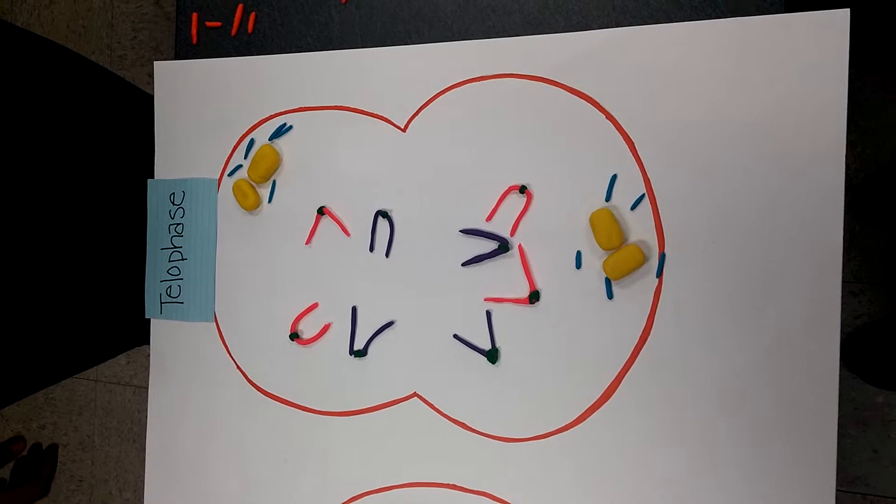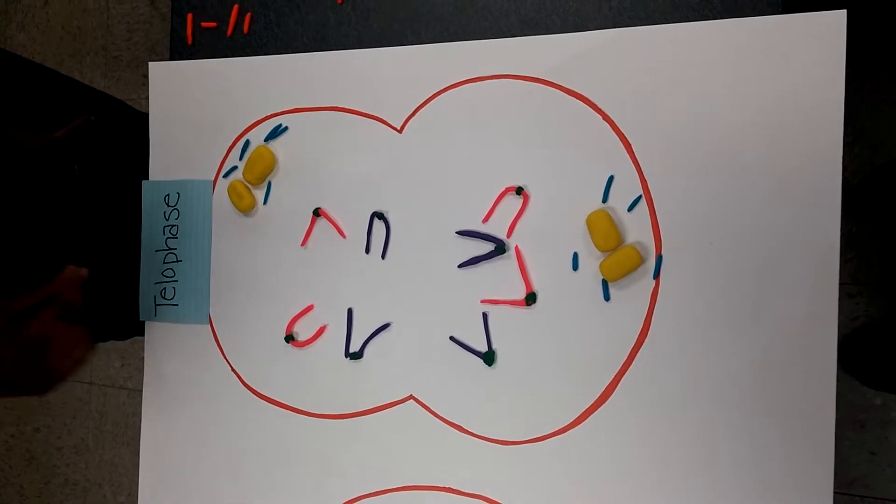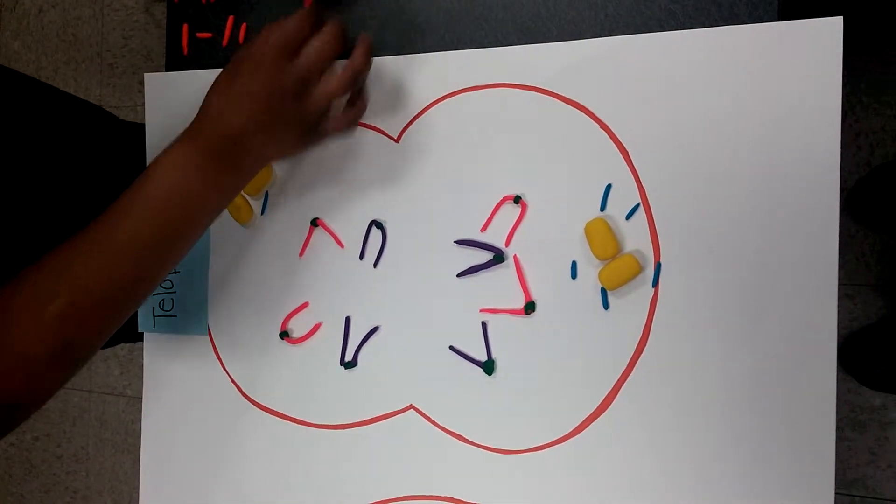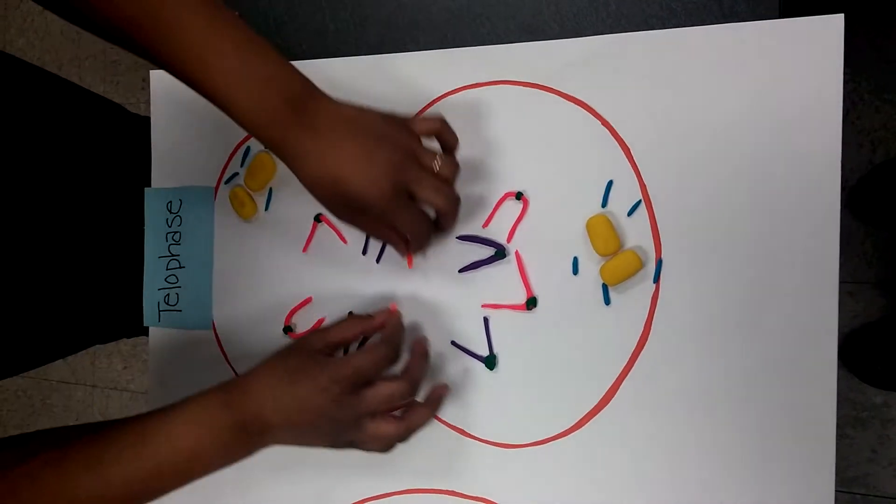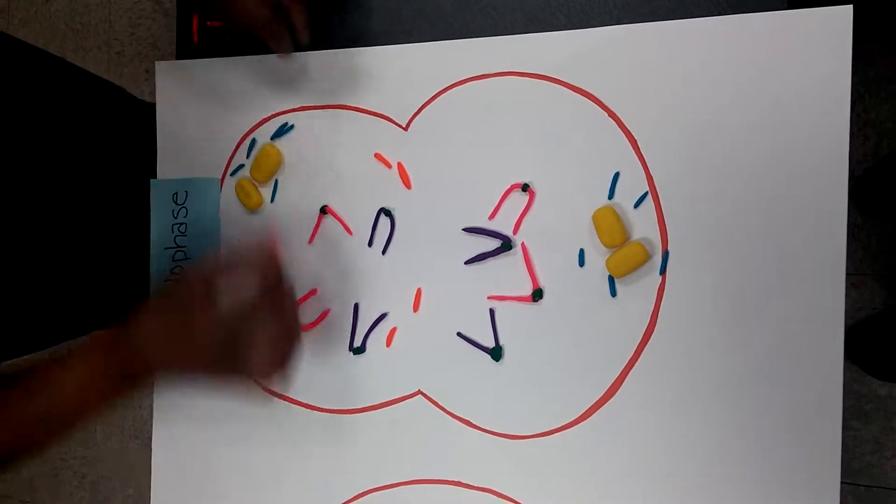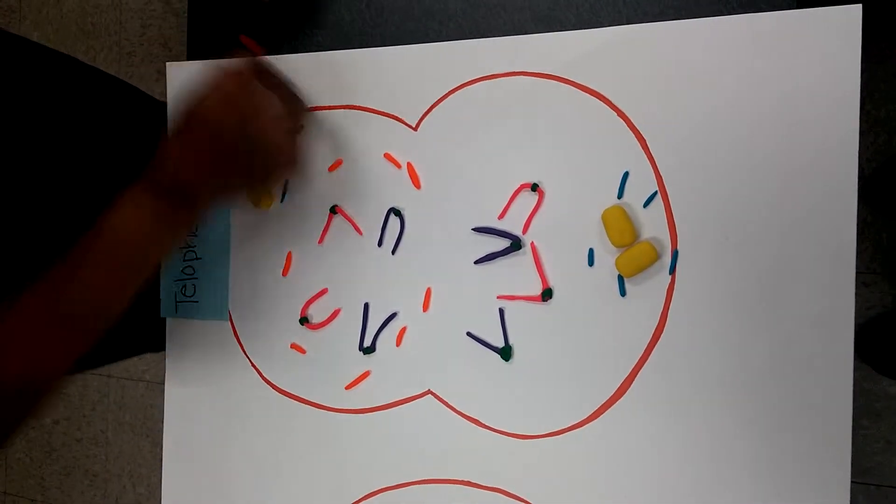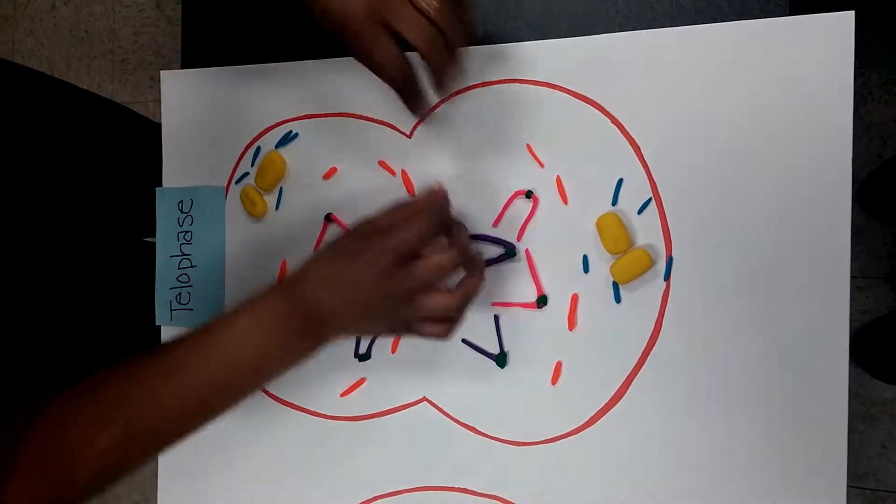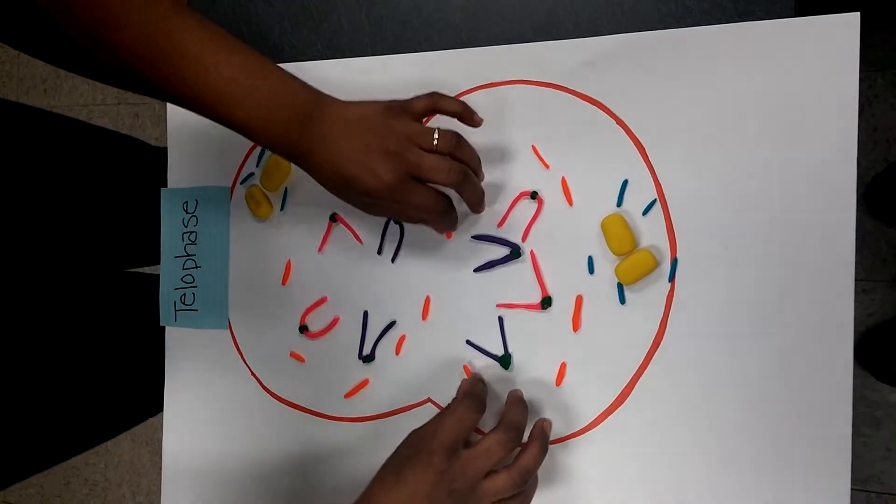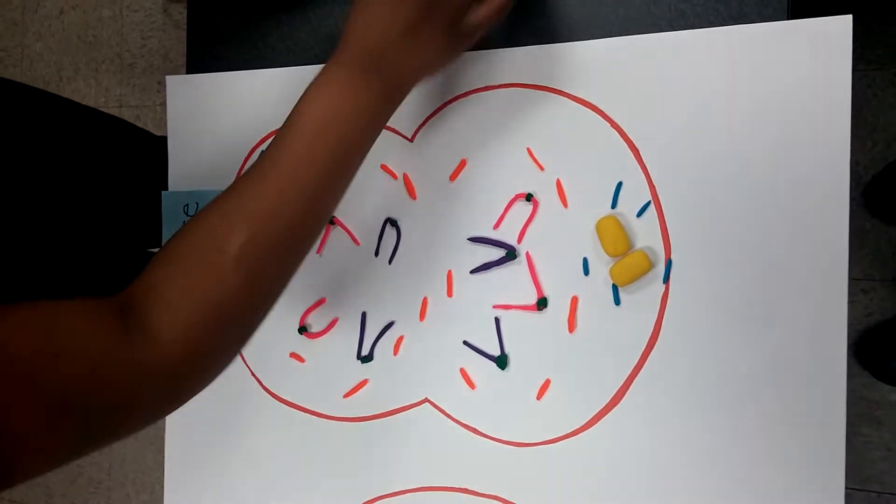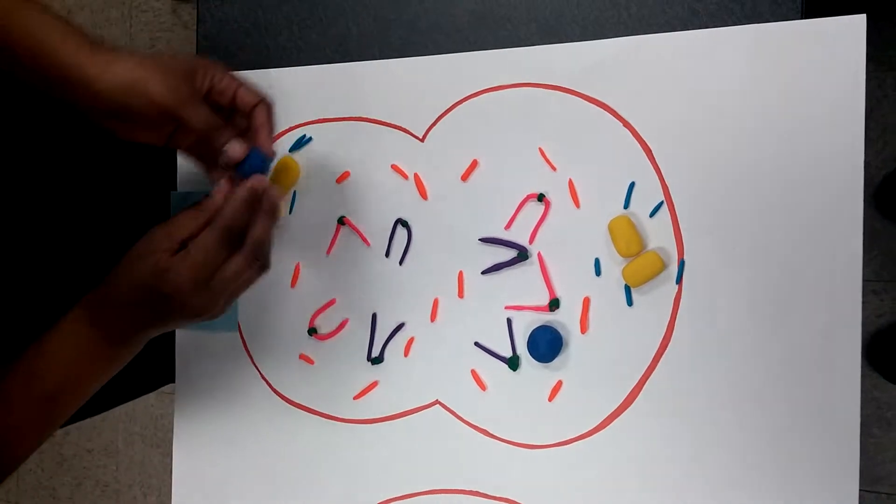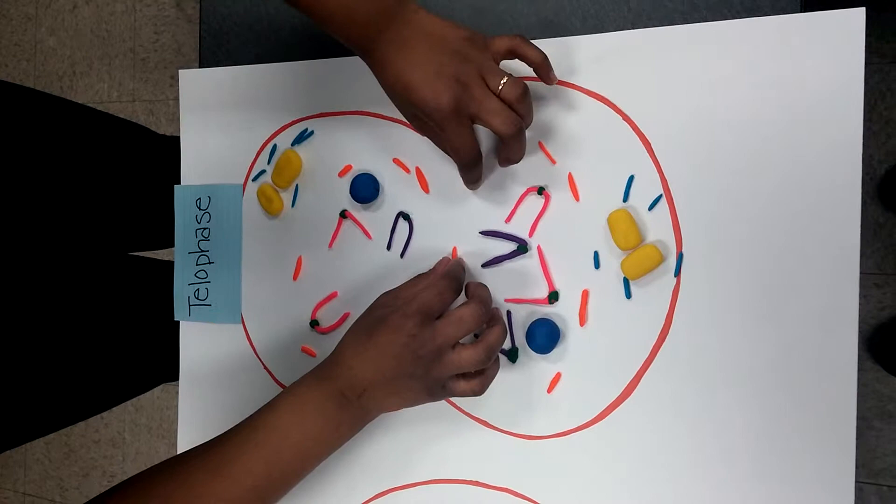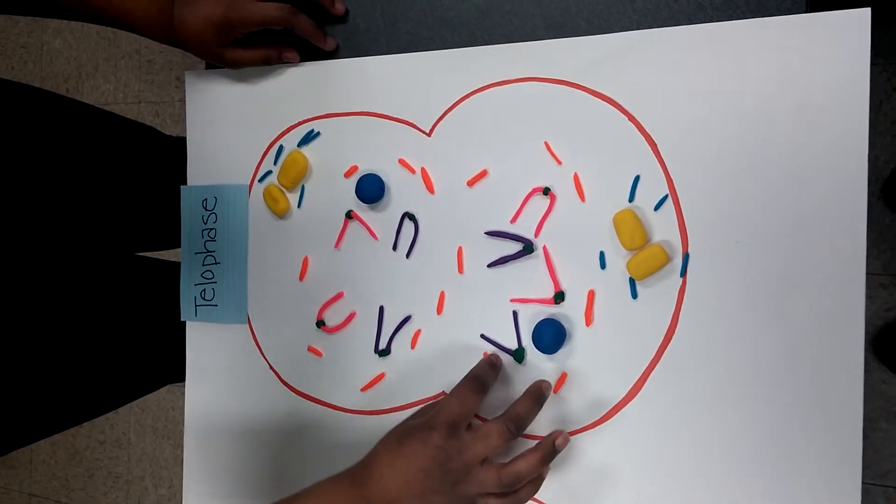In telophase, the sister chromatids are now at opposite ends of the poles where they have stopped moving. The nuclear envelope begins to reappear around the two sets of sister chromosomes. The nucleus begins to reappear and this is now the end of mitosis.